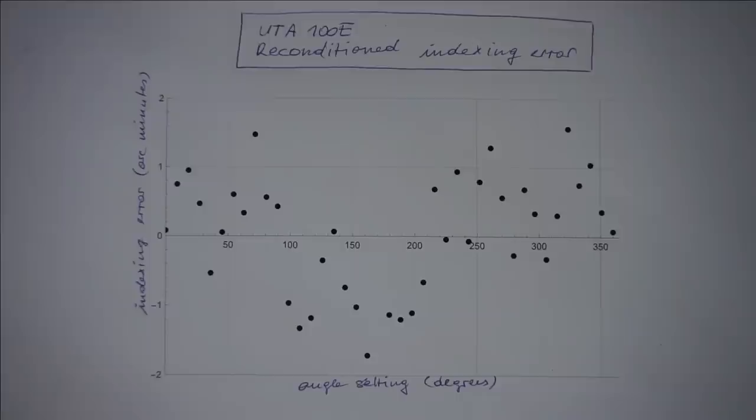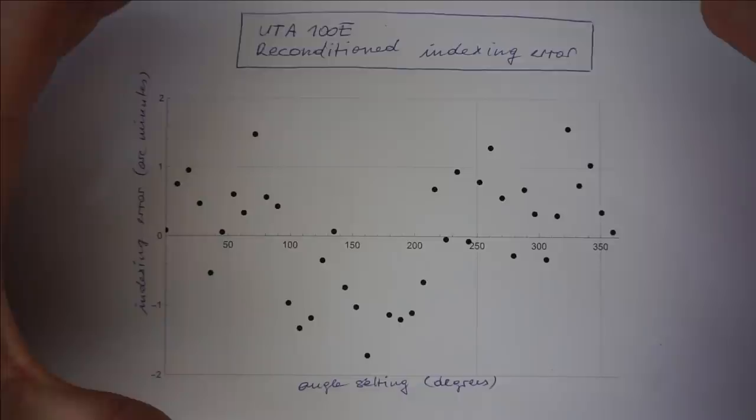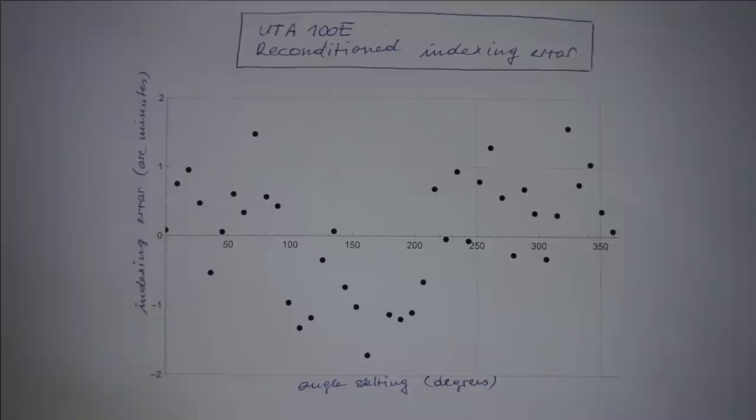But how does my worm wheel compare to the new condition of such a dividing head as it was back in the day? Unfortunately I don't know the inspection tolerances that Valter accepted for these units. However I did measure the errors of my almost unused Valter round table, which has a roughly four times larger worm wheel. The errors I found on this one were between plus minus half an arc minute, but keep in mind the much larger worm wheel size. Given the fact that location errors on small worm wheels translate much worse into angular errors, I think I may dare to say that my reconditioned worm wheel is now good as new.